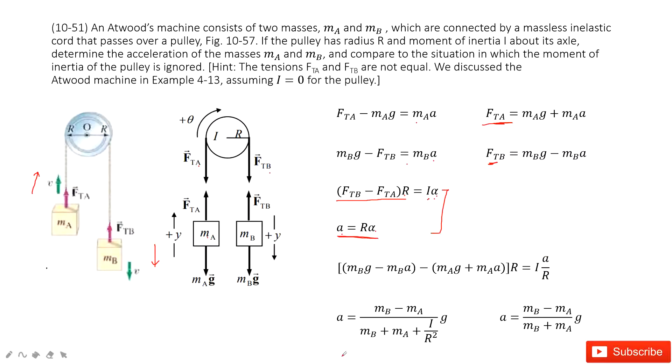We solve this equation. We get the linear acceleration equal to this one, right? This function. We can see if the I equal to zero for pulley, so the linear acceleration becomes this one. It becomes more simple. Thank you.